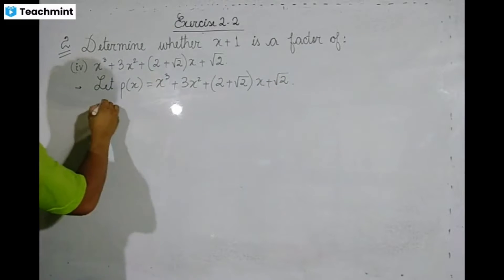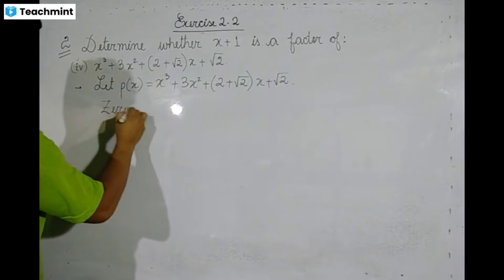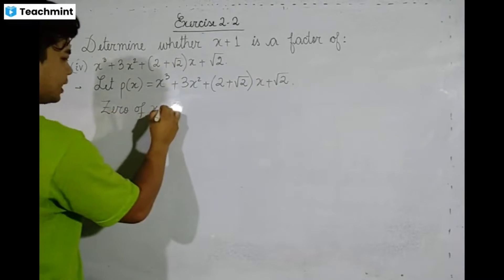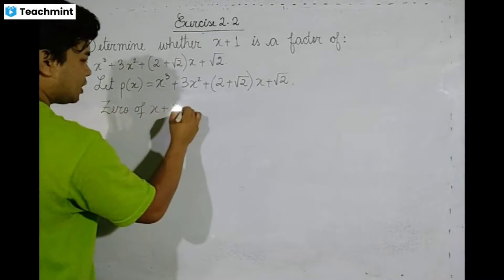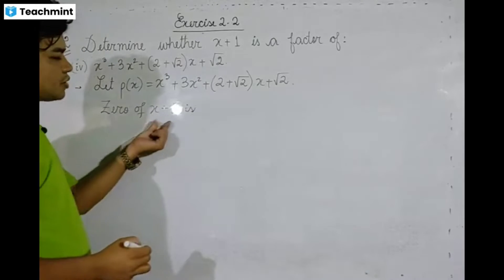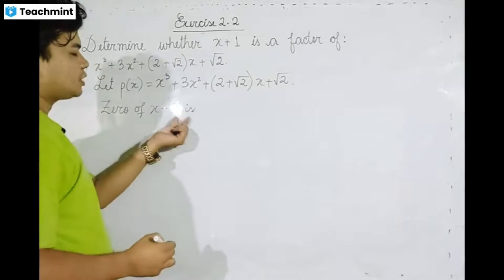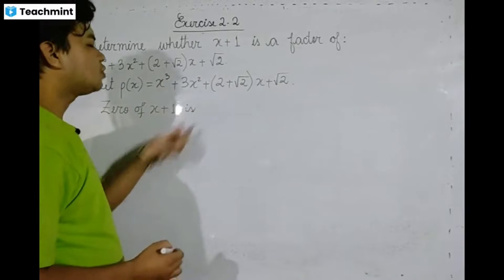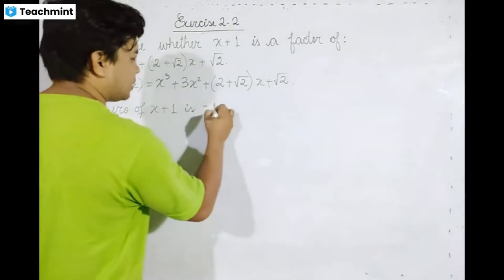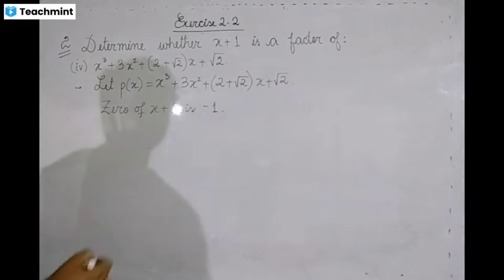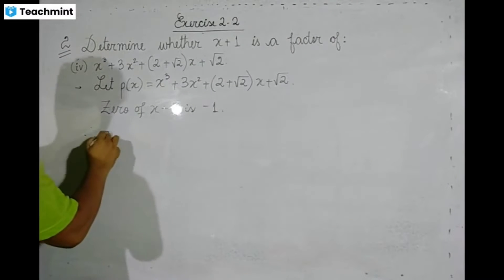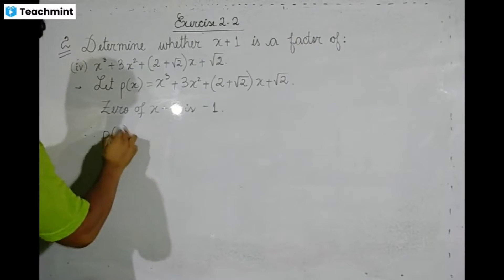If we have a zero of x plus 1, then x plus 1 is equal to 0. So the zero of x is equal to minus 1. Therefore, we evaluate P of minus 1.